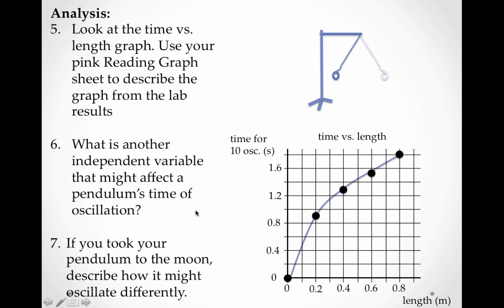Rounding out the questions here. Number five: look at the time versus length graph, use your pink reading graph sheet to describe the graph from the lab results. We've already beaten the horse on this one. We know that as the length increases, the time increases but at a decreasing rate.